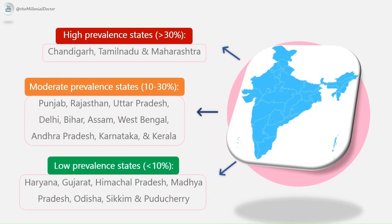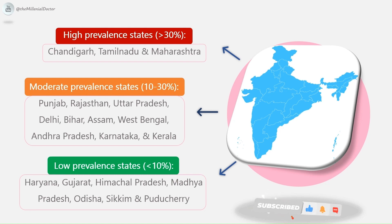In India, epidemiologically, the country can be divided into three regions depending on prevalence of intestinal amoebiasis. The first is high prevalence states, accounting for more than 30%: Chandigarh, Tamil Nadu, and Maharashtra.